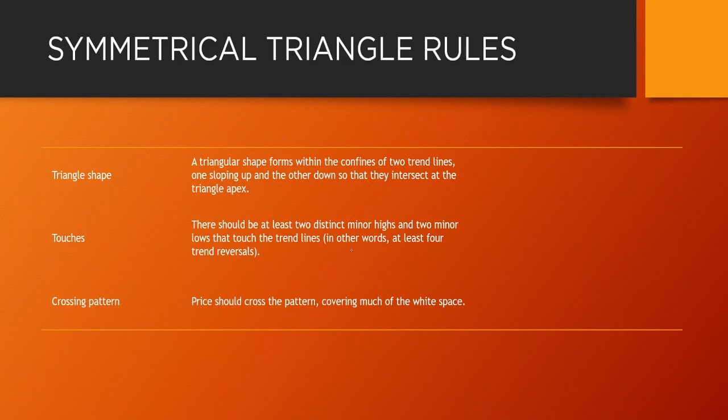The rules for the symmetrical triangle: a triangular shape forms within the confines of two trend lines — one sloping up and the other sloping down — so that they intersect at the triangle apex. There must be at least two distinct minor highs and two minor lows touching the trend lines. The same crossing pattern rule applies: we don't want too much empty space inside the triangle.